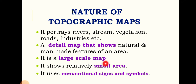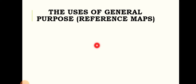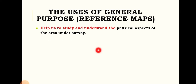It also uses blue color for water bodies, green color for vegetation, and red color for extreme mountains. The use of general purpose or reference maps — topographic maps — helps us to study and understand the physical aspect of the area under survey.